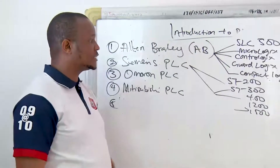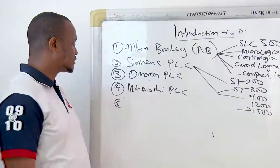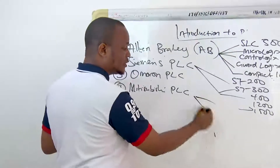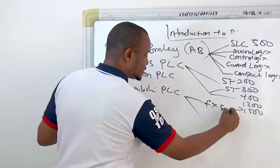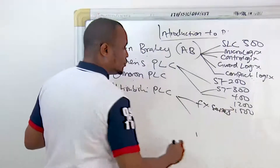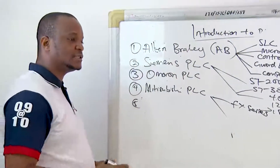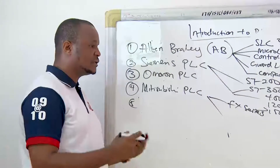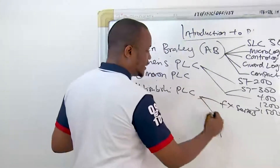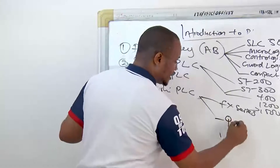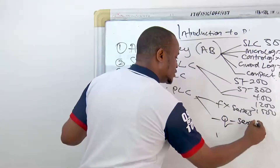For Mitsubishi PLC, we have the FX series — under the FX series we have many models: the 1N, 2N, 3U, 5G, and others. These are all different types of PLCs made by Mitsubishi. We also have the Q series, which are the modular brands of PLCs.